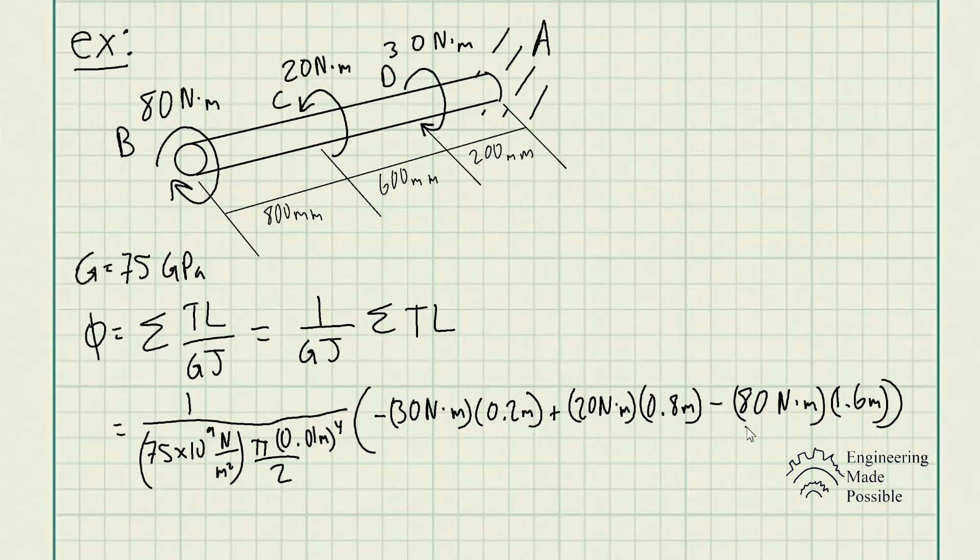And finally, at point B, we have the 80 Nm being applied. In this case, clockwise, which is negative. And so 80 Nm times 1.6 meters, because you add up all the lengths from the fixed point to where that torque is being applied. And that's going to be the total angle of twist.